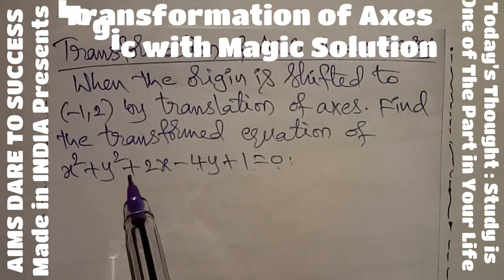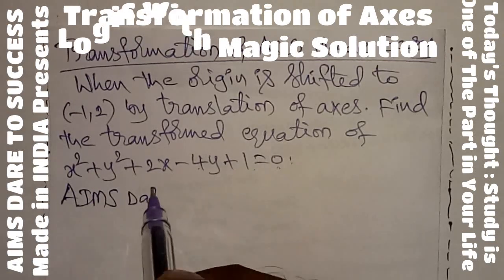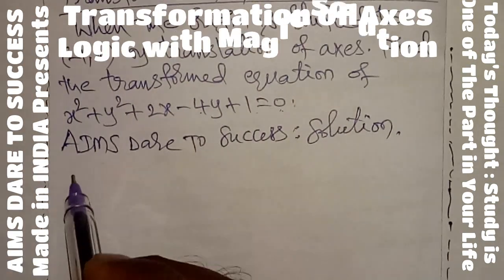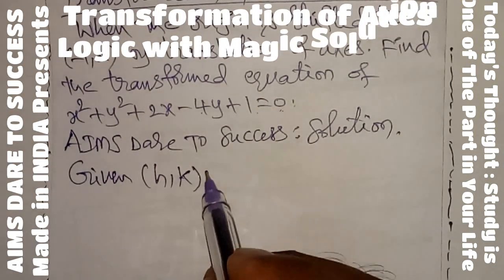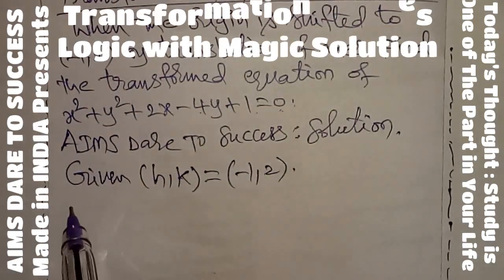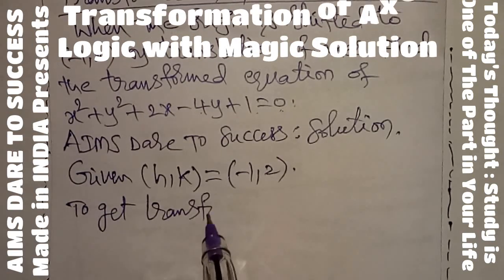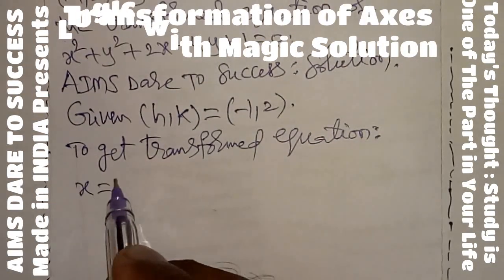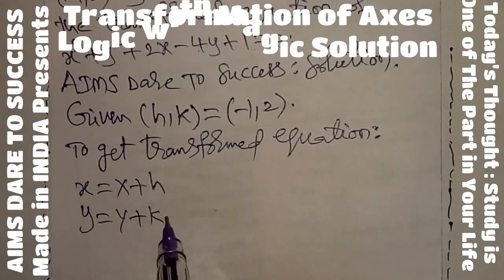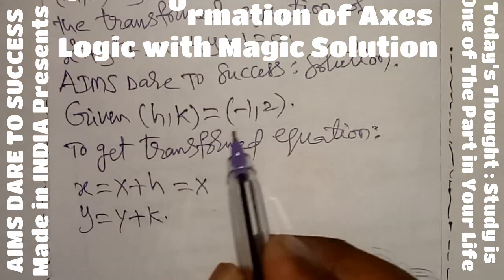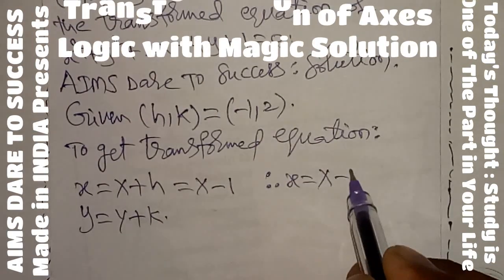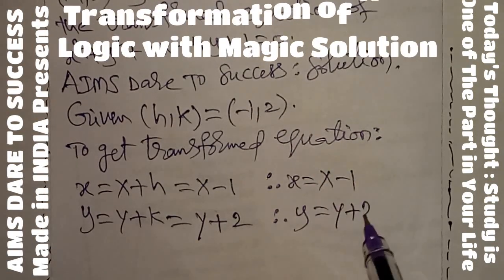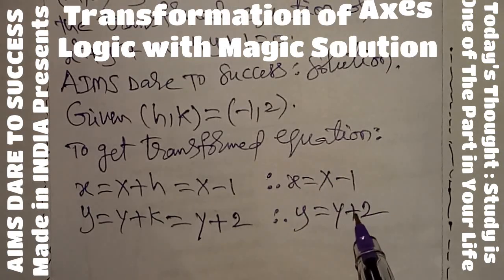Using this formula we can get the answer. According to this question, the origin is shifted to (h, k), and the given point is (−1, 2). So substituting: small x = capital X + h, where h = −1, therefore small x = capital X − 1. Small y = capital Y + k, where k = 2, therefore small y = capital Y + 2. Now substitute these into the given equation.